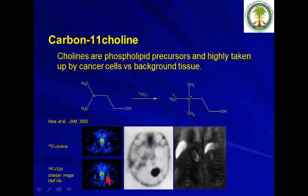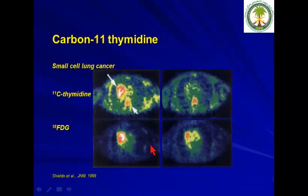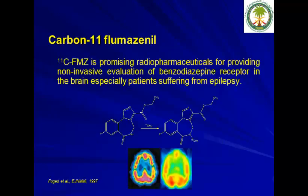Carbon-11 choline is similar to F18-choline. Studies show that F18-choline produces sharper images than C11-choline due to the longer half-life and shorter positron range of fluorine-18. Carbon-11 thymidine is almost the same as fluorine-18, but there are two ways to produce it; it has shown to be very useful in small lung cancer compared with FDG. Carbon-11 flumazenil is another promising radiopharmaceutical for diagnosis of epilepsy, giving results comparable to fluorine-18.